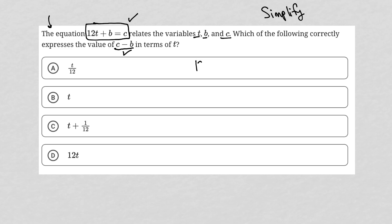So I'm going to rewrite my equation, 12t plus b equals c. Now what can I do to this equation so that I have c minus b isolated and I can therefore give the value of c minus b?